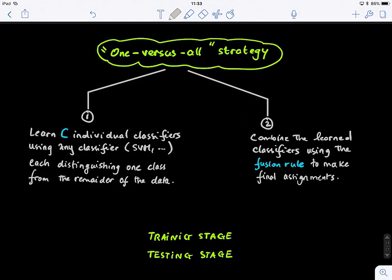And just to summarize this part, so what do we have, we have, this is what we call the one versus all strategy. So the first step will be to learn individual classifiers using any linear classifier, SVM, perceptron, et cetera, each distinguishing one class from the remainder of the data, and then the second step will combine the learned classifiers using the fusion rule to make the final predictions or assignments.